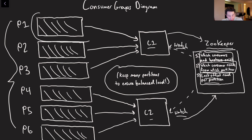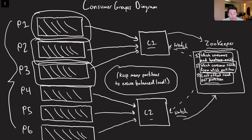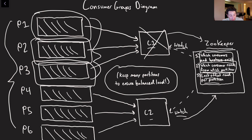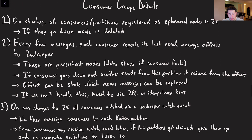Every once in a while, as C1 is reading, it's going to come to Zookeeper and say here's the last offset that I read. The reason is because if C1 goes down, someone else needs to take over reading for those three partitions, and when they do, they want to resume at the last offset that C1 was reading. Since C1 is only updating that offset every few seconds or every few messages, it is possible that the new consumer that takes over may actually re-read some messages that C1 already handled. We basically have to deal with that either by doing a two-phase commit, which is pretty inefficient, or we can use something like idempotency keys, or we can just deal with the fact that certain messages get read twice.